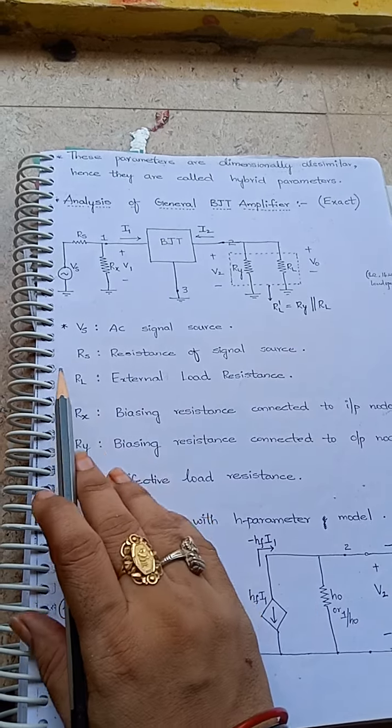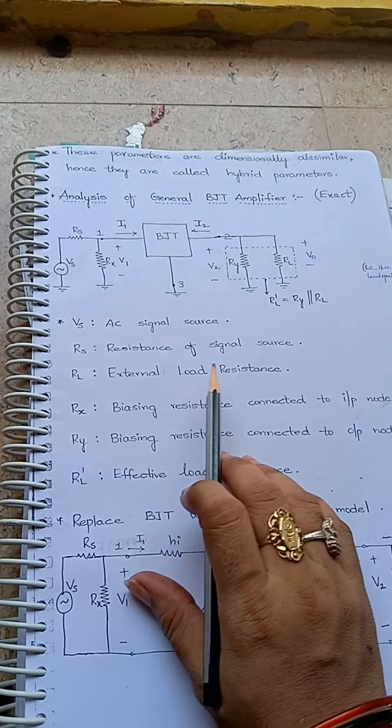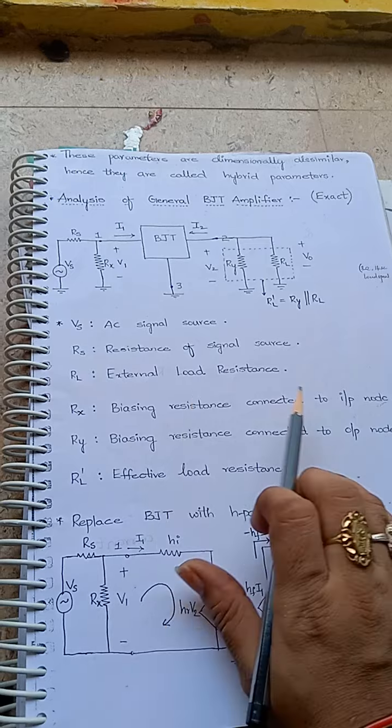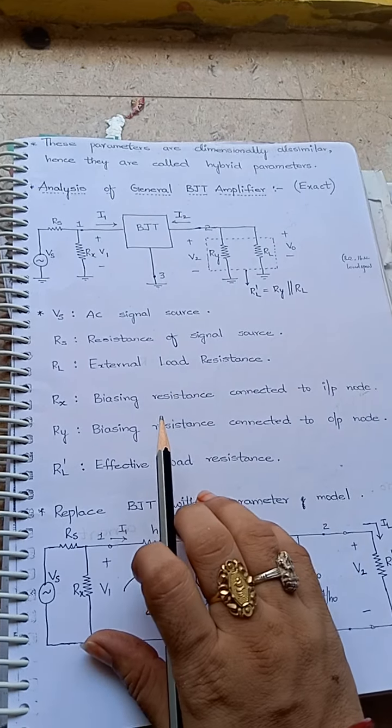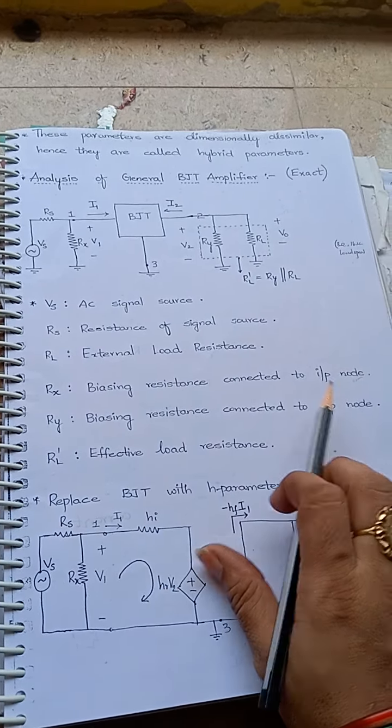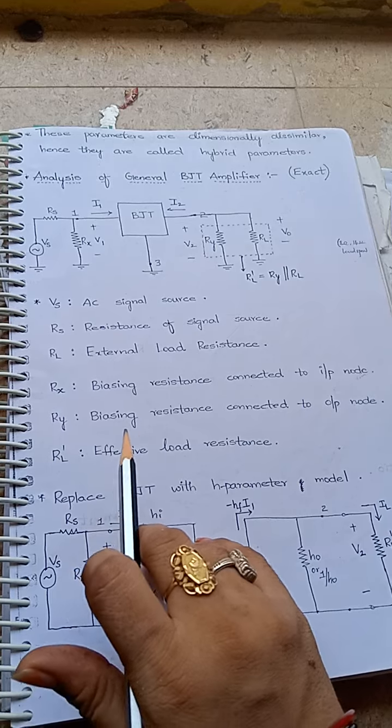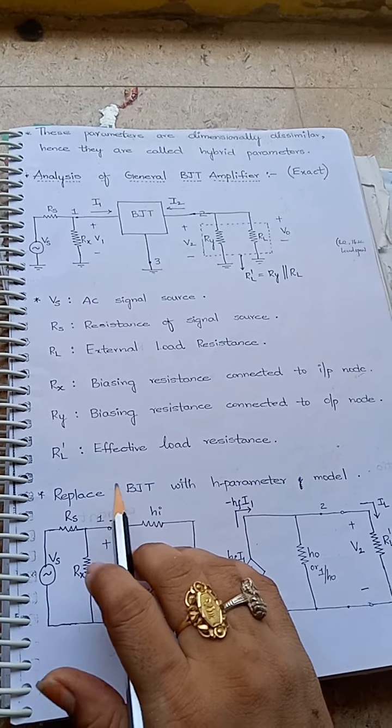RL' equal... Vs equal to AC signal source, Rs resistance of signal source, RL external load resistance, Rx biasing resistance connected to input node, Ry biasing resistance connected to output node, RL' is the effective load resistance.